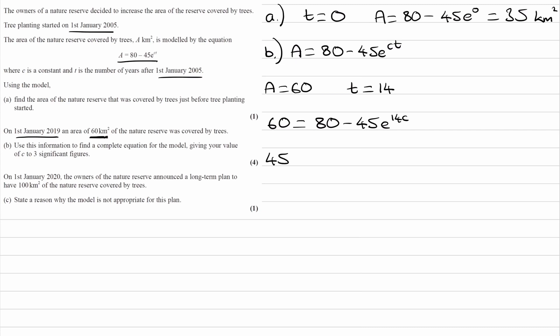First, bring the 45e^(14C) to the left side and the 60 to the right. The right side becomes 20. Then divide both sides by 45: e^(14C) = 20/45, which is the same as 4/9. Then do natural logs of both sides: ln(e^(14C)) = ln(4/9). Ln and e are inverse operations, so they cancel out. The left side becomes 14C and the right side is ln(4/9). Divide by 14: C = ln(4/9)/14.